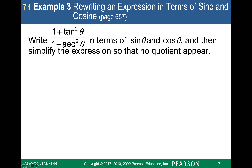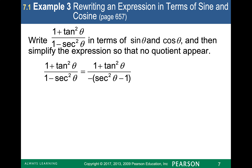If I want to write 1 plus tangent squared over 1 minus secant squared in terms of sine and cosine, I'll use the fundamental identities. I know that tangent squared equals secant squared minus 1, so I'm going to factor out a negative. Then 1 plus tangent squared theta equals secant squared theta, since I've solved that identity by adding 1 to both sides.